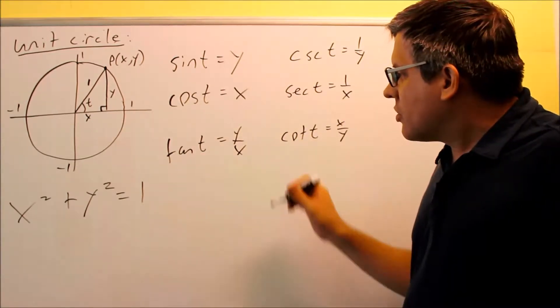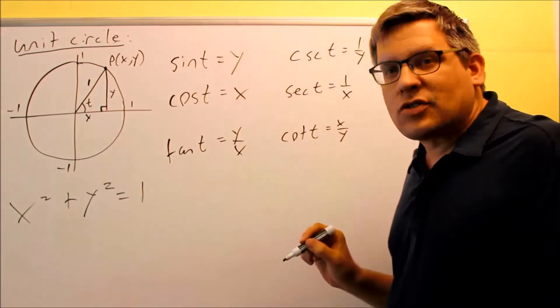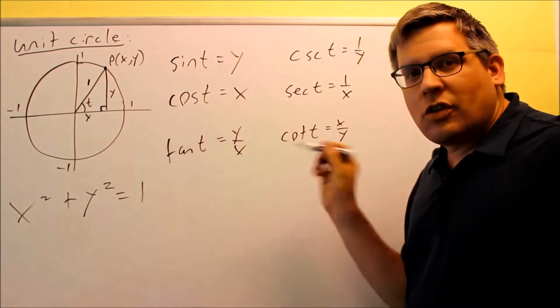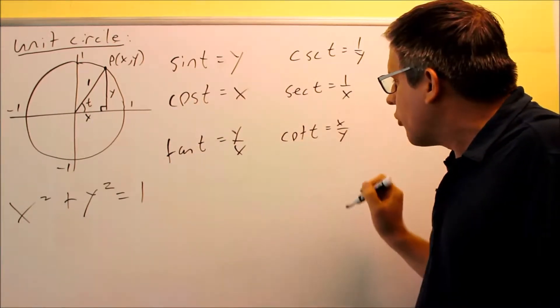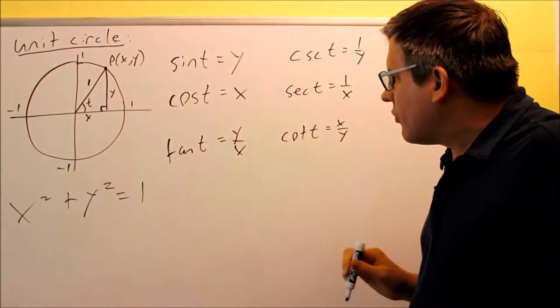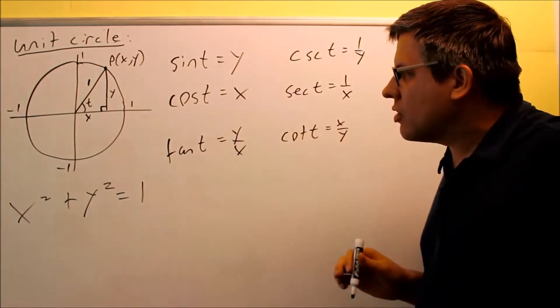Tangent is the ratio of the y-value over the x-value. So y over x, that would represent tangent of that theta. And then we have cotangent t, which is x over y. That one would be the reciprocal of tangent. So again, all these six trig functions come off of the unit circle.